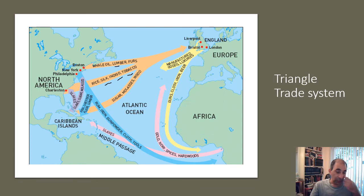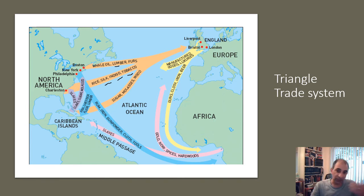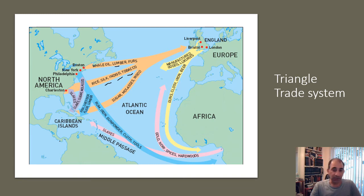So that's the triangle trade and slave trade system. Be specific when studying it — don't just say raw materials; know which raw materials were taken and what manufactured goods were exchanged. Both the Enclosure Acts and the Triangle Trade are very important economic developments of the 1700s.